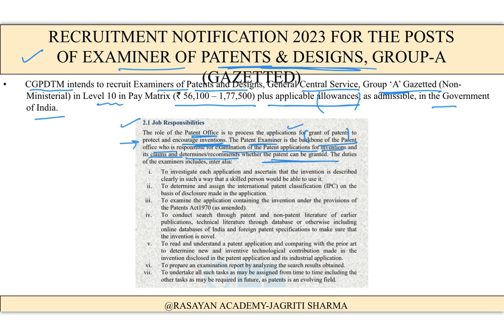The examiner determines or recommends whether the patent can be granted or not. A most important part is to conduct a search through patent and non-patent literature and earlier technical publications to verify that the invention is novel — absolutely new and never done before. They also examine the application under the provisions of the Patents Act, 1970.